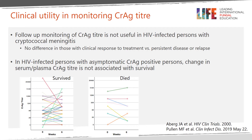Finally, what is the clinical utility of monitoring CRAG titer over time? Follow-up monitoring of CRAG titer is not useful in HIV-infected persons with cryptococcal meningitis — no difference has been seen in those with clinical response to treatment versus persistent disease or cryptococcal relapse. Furthermore, in HIV-infected people with asymptomatic cryptococcal antigenemia, change in serum or plasma CRAG titer is not associated with survival. The figures below depict CRAG titer values at baseline and six weeks thereafter for patients who survived to six months versus those who died before six months, with no statistically significant difference in titer change between groups.